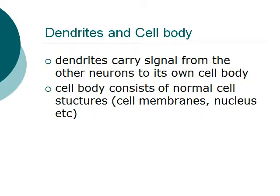Let's talk about the dendrites and cell body first. Dendrites carry signals from another neuron to its own cell body. The cell body consists of normal cell structures such as the cell membrane, nucleus, and so on.